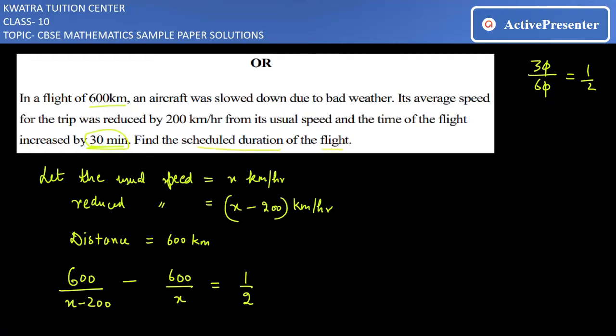For the scheduled duration of flight, what you do is take 600 common on the left side. Then you have 1 over x minus 200 minus 1 over x is equal to 1 over 2. Now take the LCM, which would be x times x minus 200.